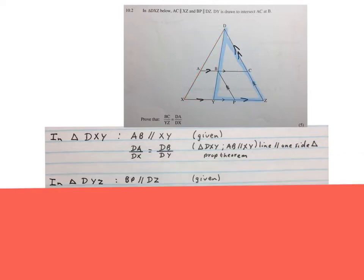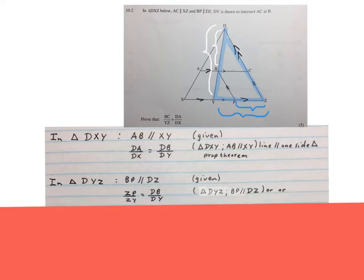Then we may write in triangle DYZ, BP is parallel to DZ, also given. Those two lines are parallel in the blue triangle. Then we can write ZP over ZY is equal to DB over DY, and then the reason that you choose to use. We wrote we have a triangle DYZ and we got two lines parallel, or the method you like.